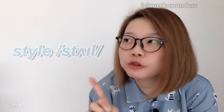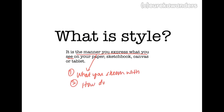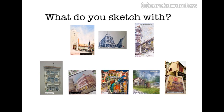So according to the Oxford dictionary — and as I say, this is really based on my observation and analysis — let's go to the drawing board to discuss the different urban sketching styles. We have to define what style is. Style is the manner you, the sketcher, express what you see on your paper, sketchbook, canvas, or tablet. There are two components: firstly, what you sketch with, and secondly, how you sketch it. When we talk about what you sketch with, we're talking about medium.